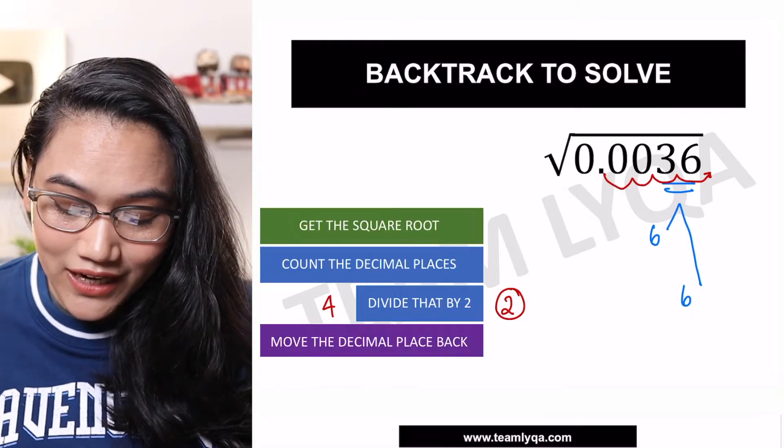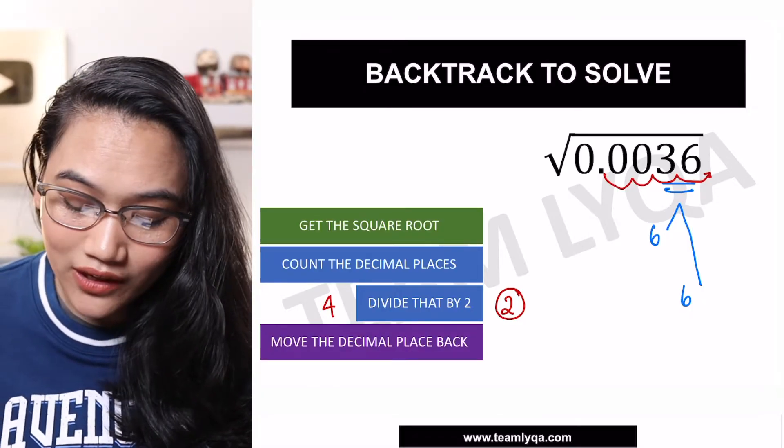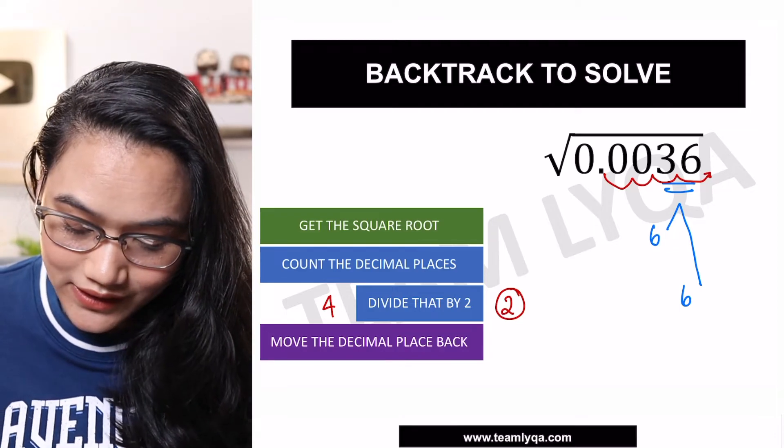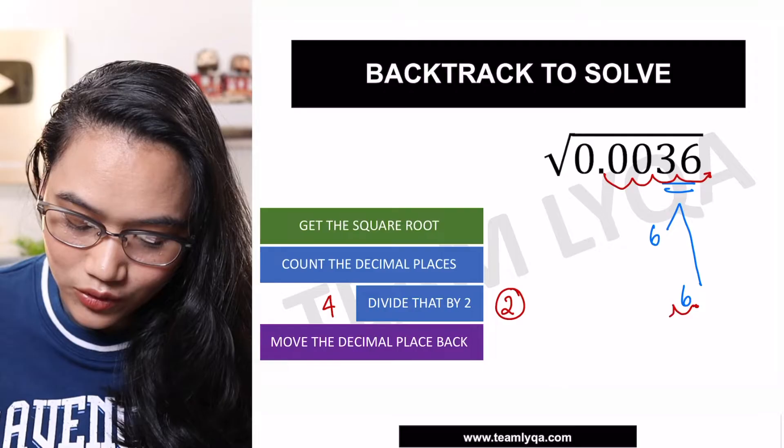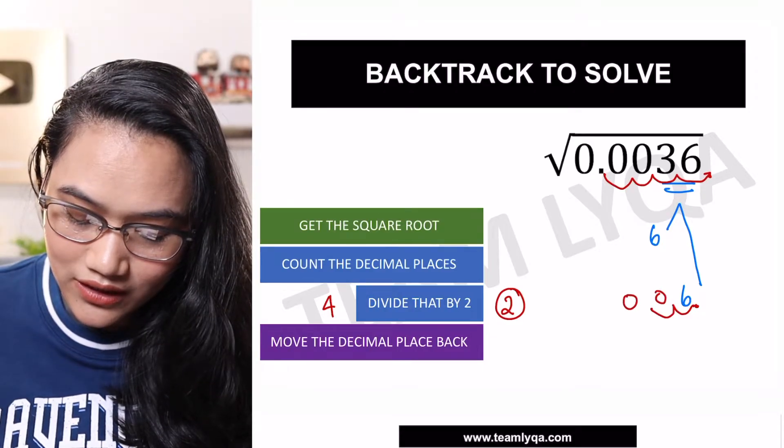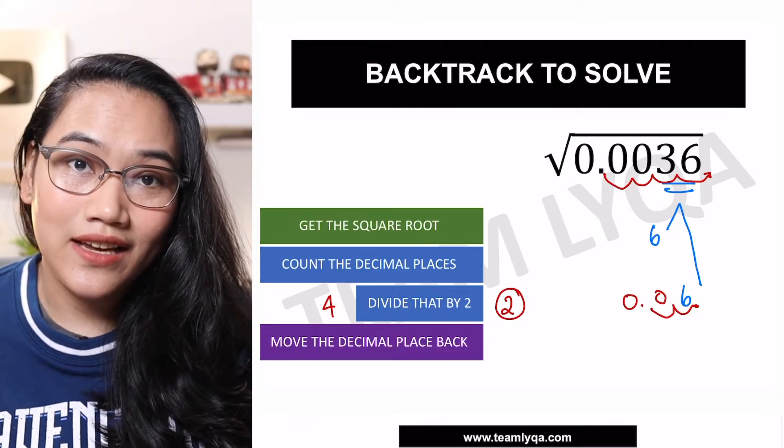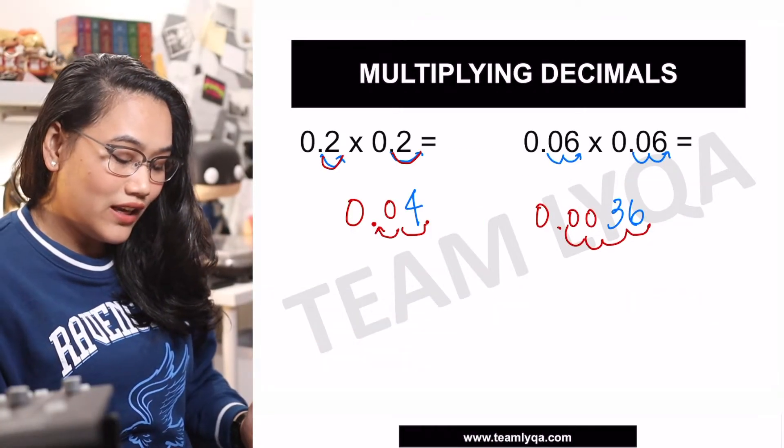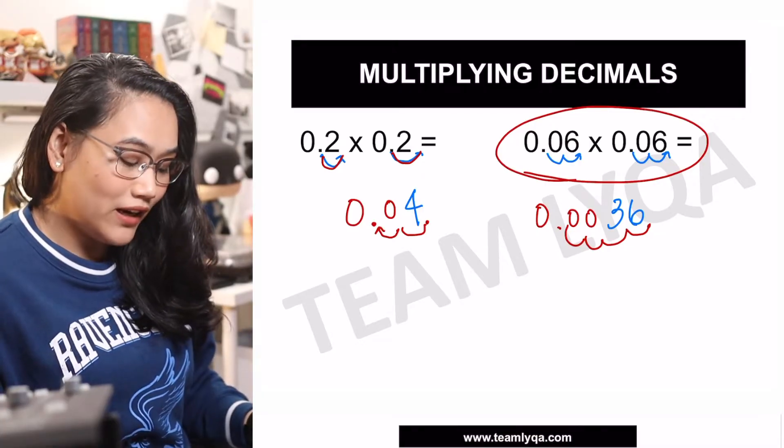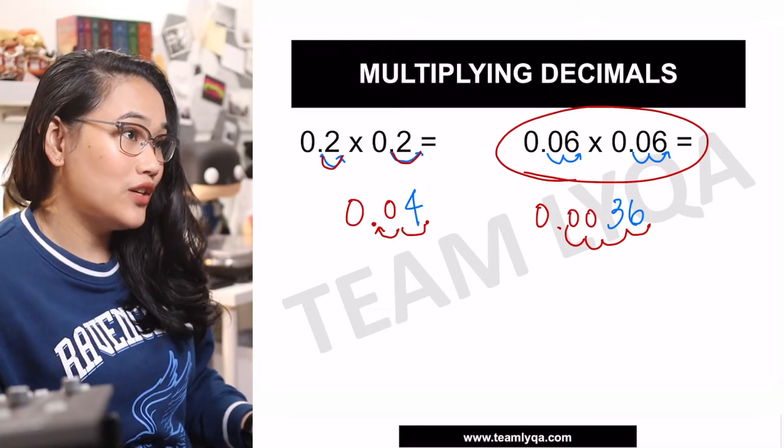Then, that 2, we will just move the decimal place back to the number we got. This time, it is 6. So we move it once and twice. It's going to give us 0.06.